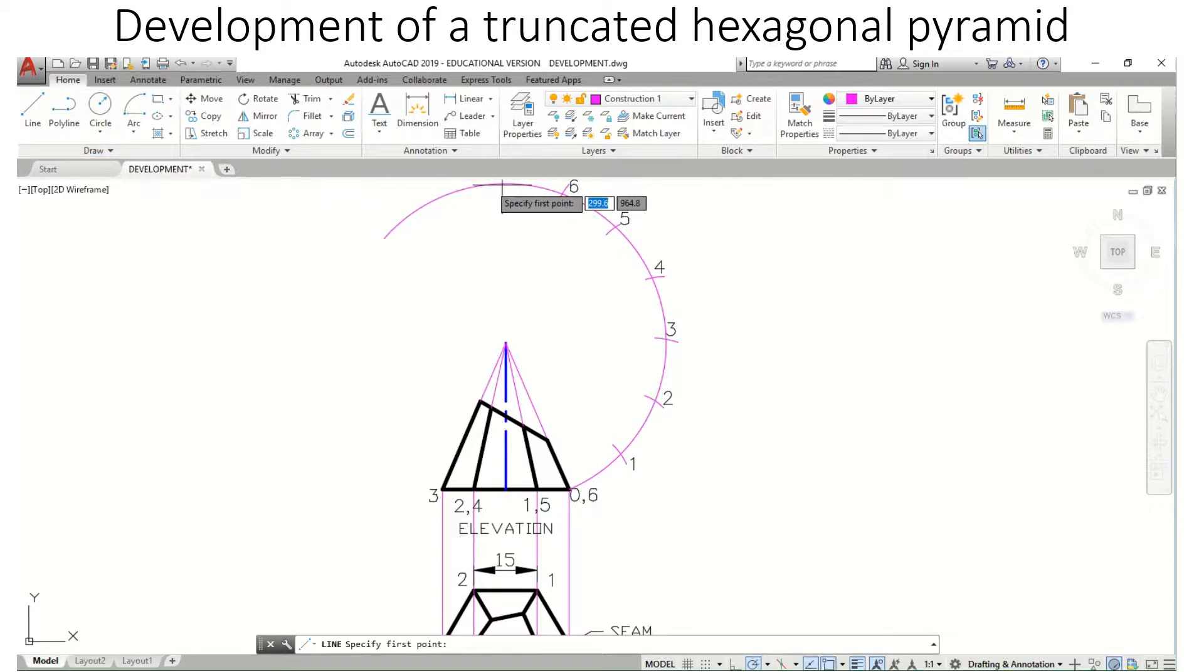Let's get a line in here. Basically, this shape here would be the perimeter of the development, giving us a development of our pyramid before it was cut.